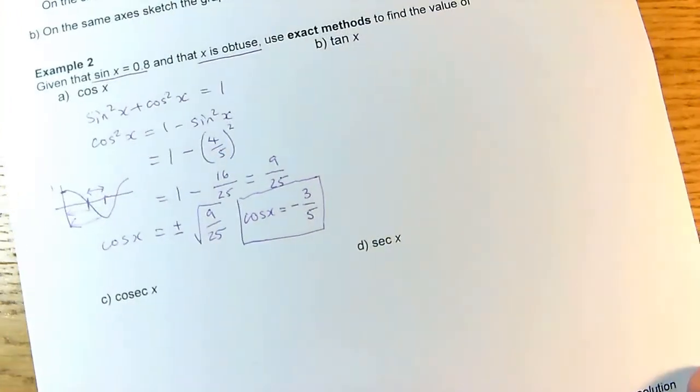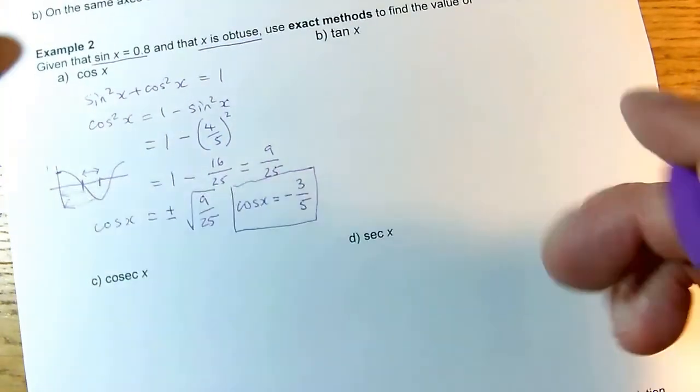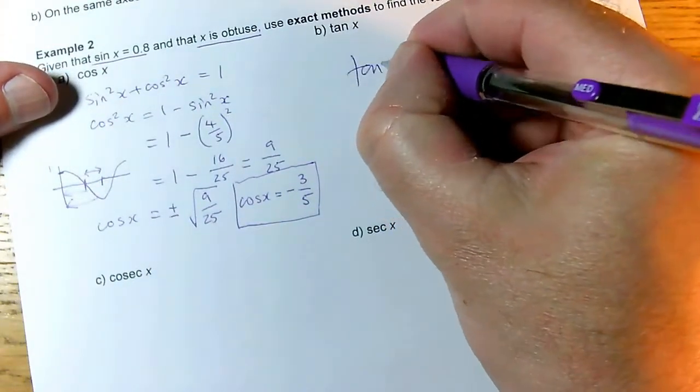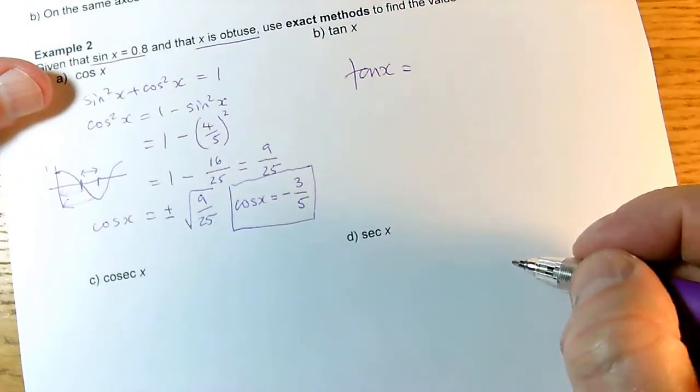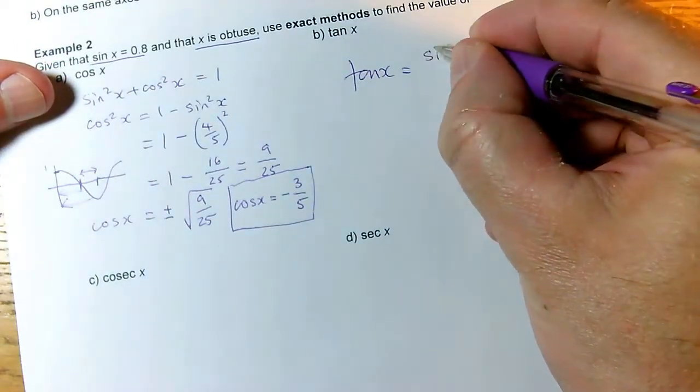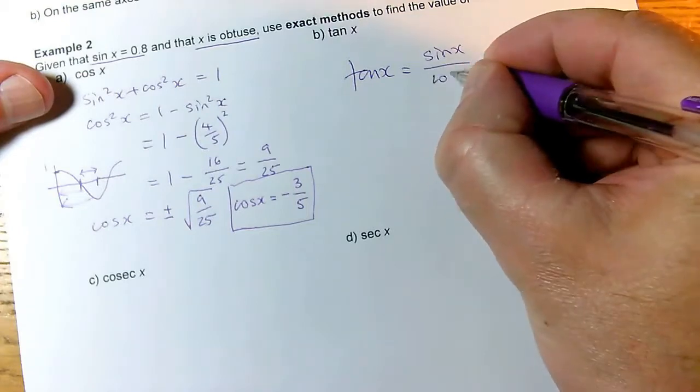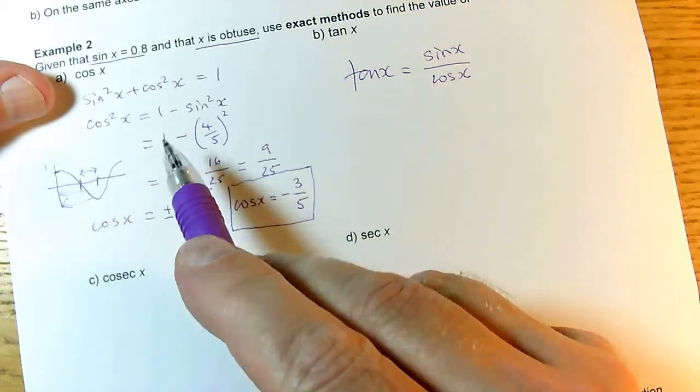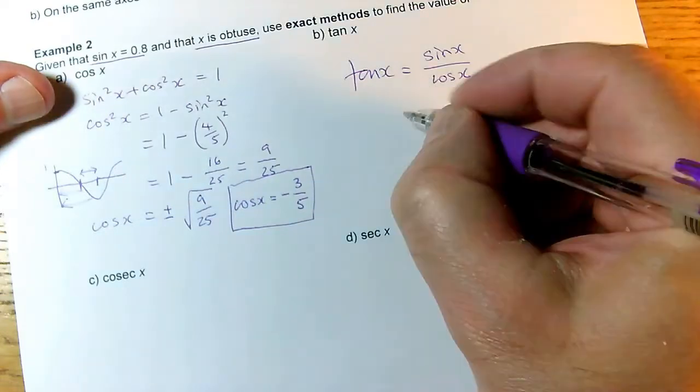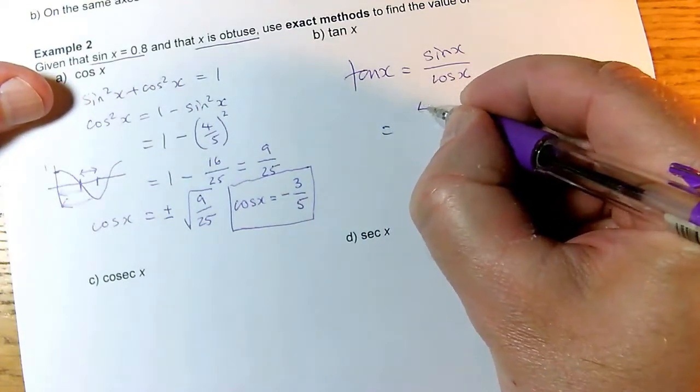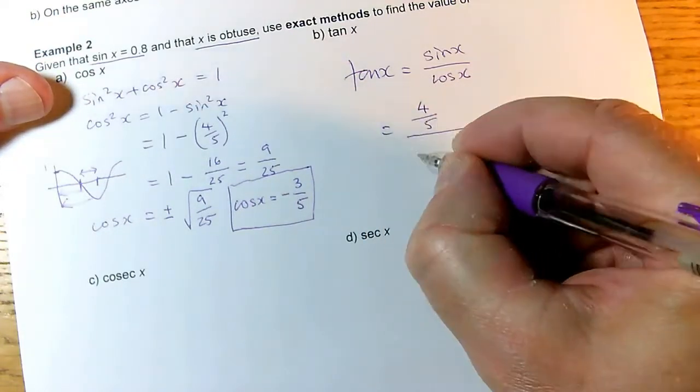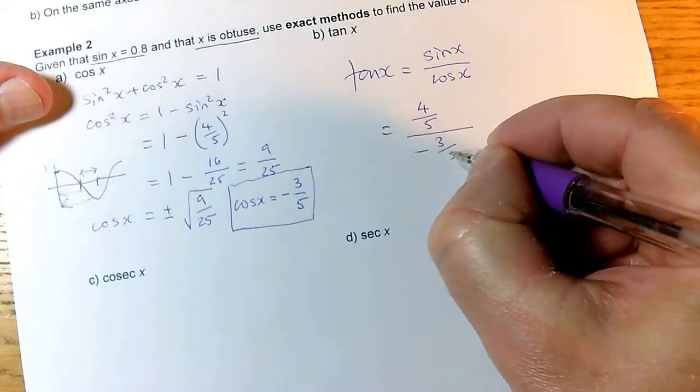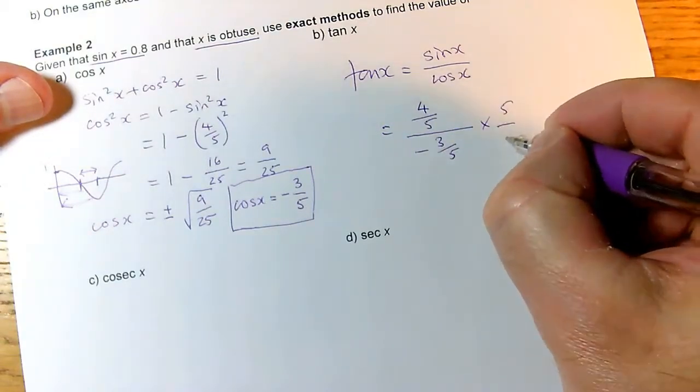That unlocks all the other parts of the question. Now I want to know what tan x is. The one thing I know about tan x, from Core 2, is that it's sin x over cos x. I've always known sin x, and I now know cos x. So it is sin x, which was 4/5, divided by cos x, which is -3/5. I can multiply top and bottom by 5.